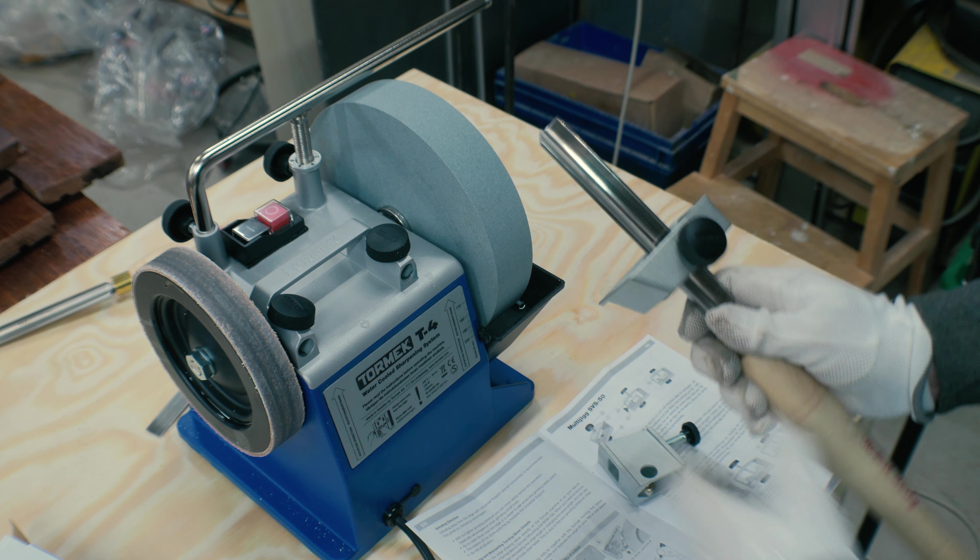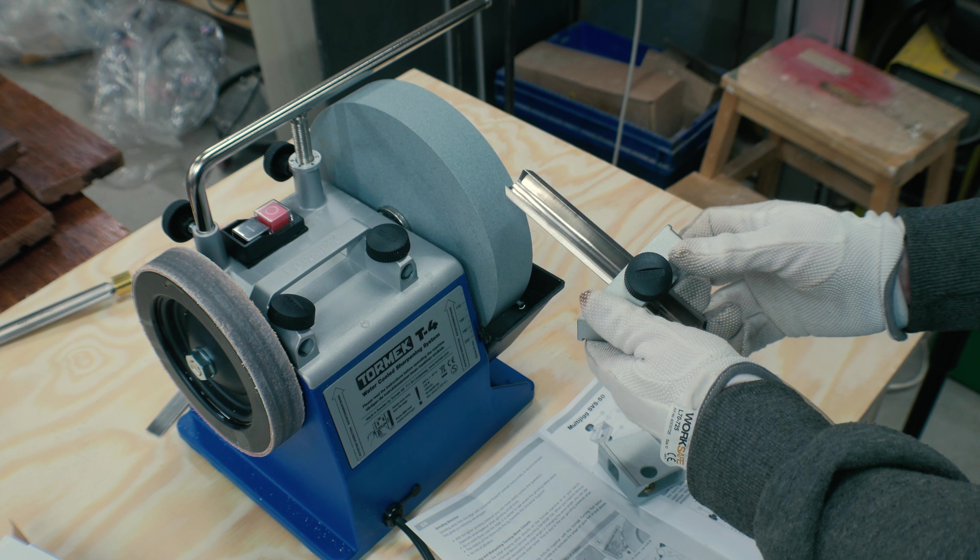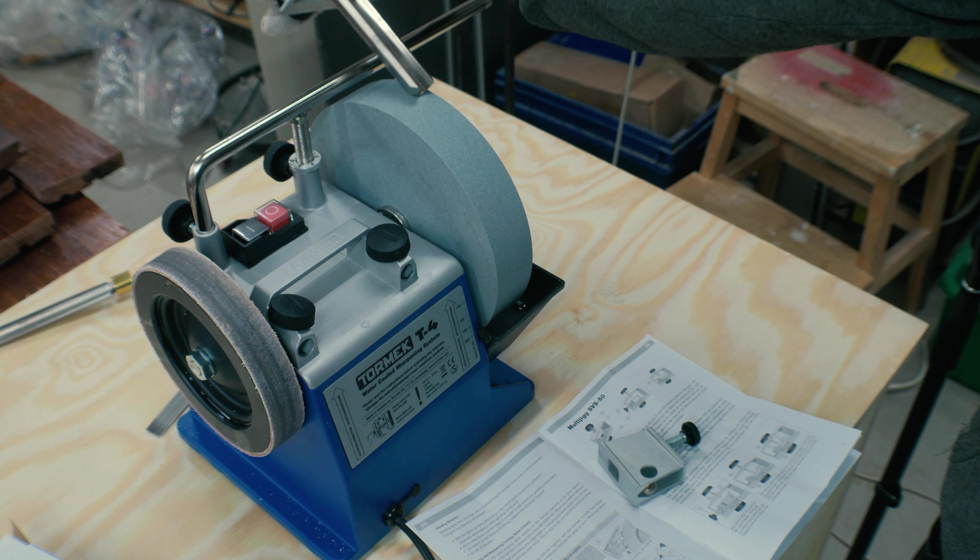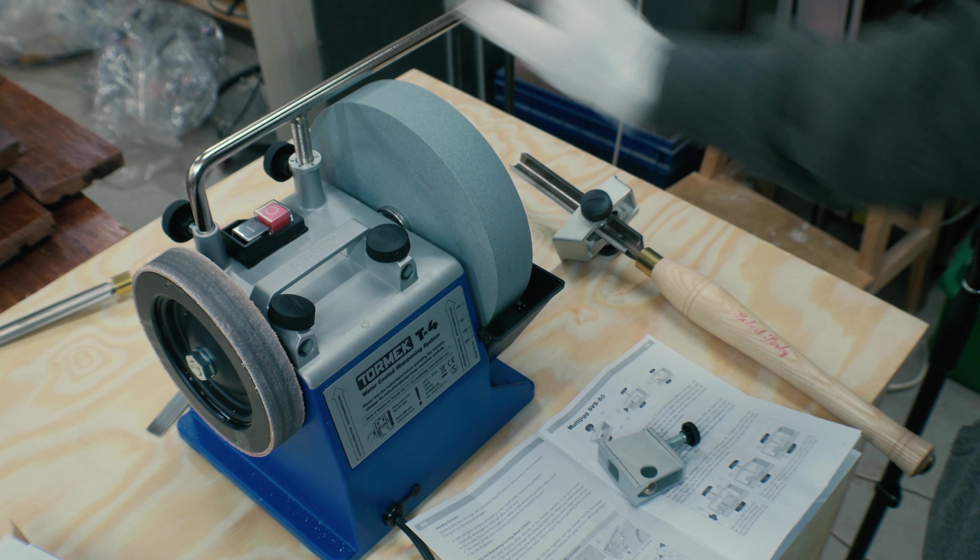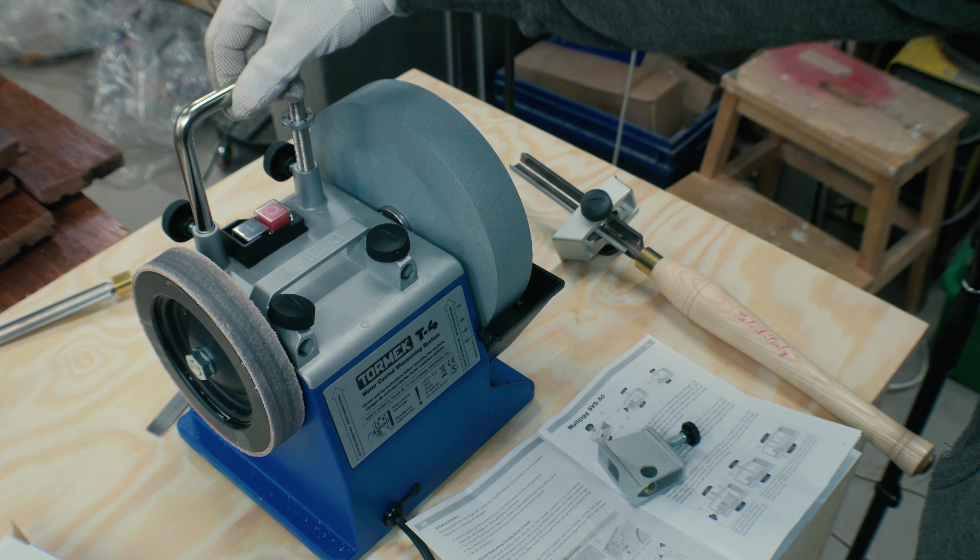This jig can be used in both directions on the grinding stone like so, and also up here like so, but I'm going to try to use it down here. So I need to take out this universal support.